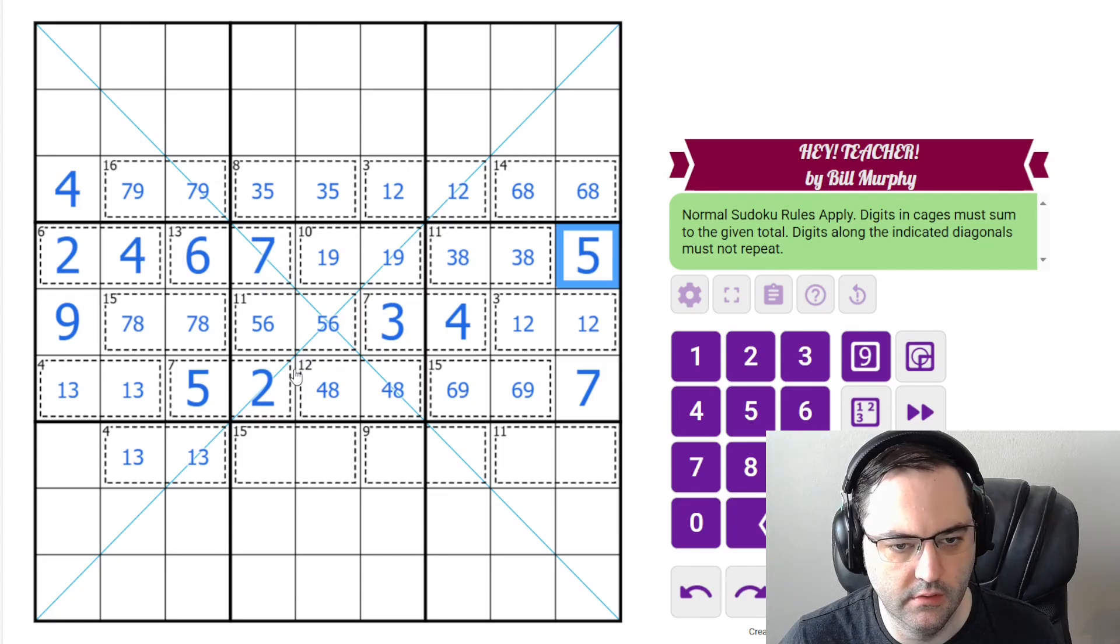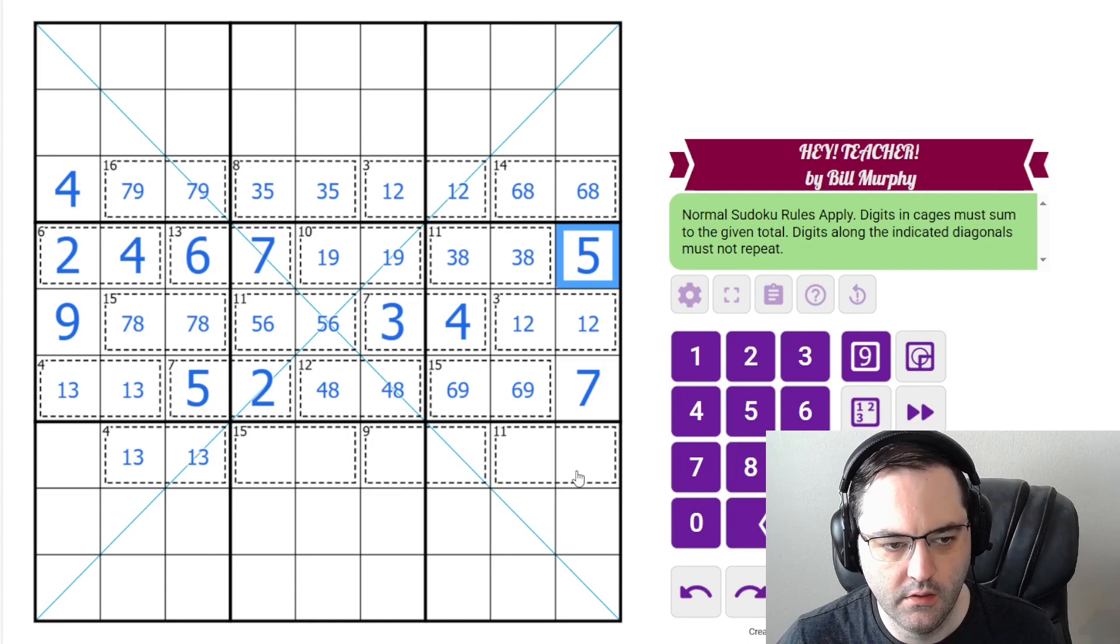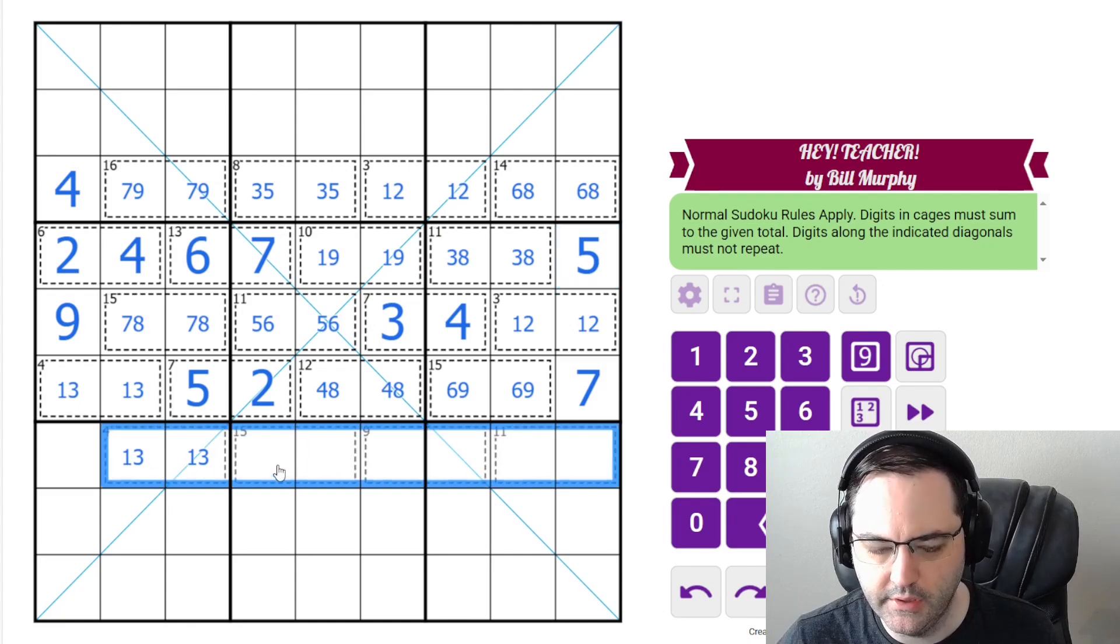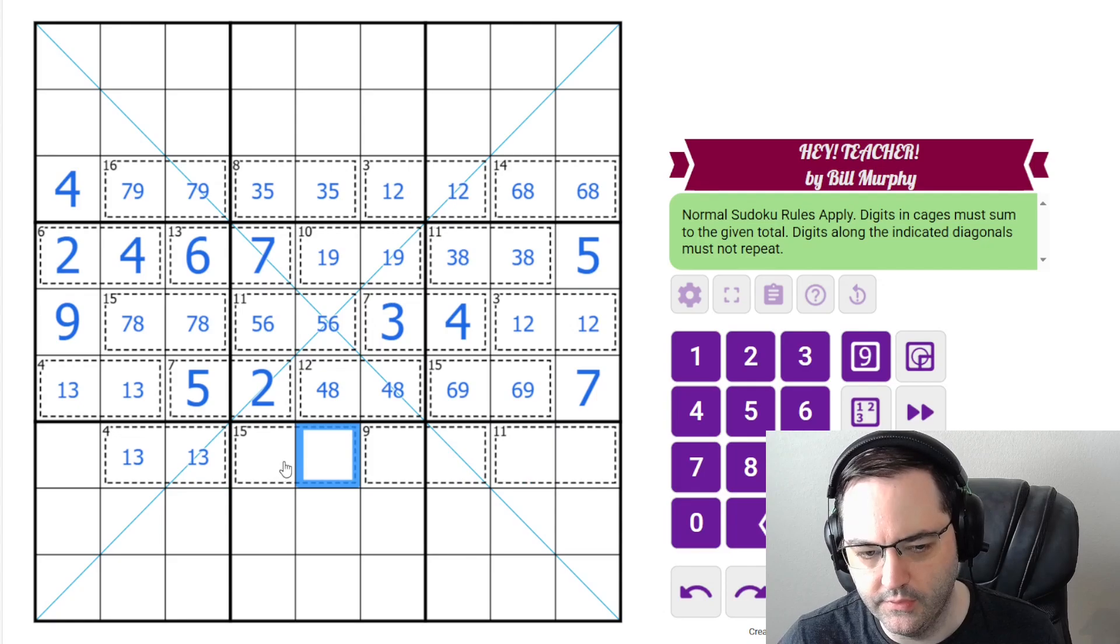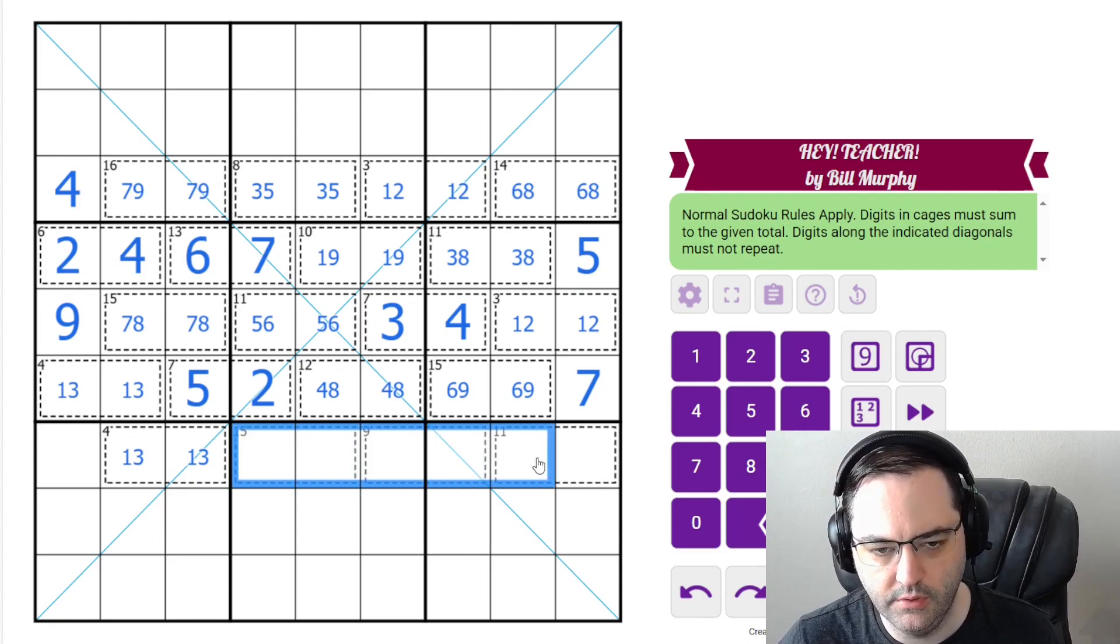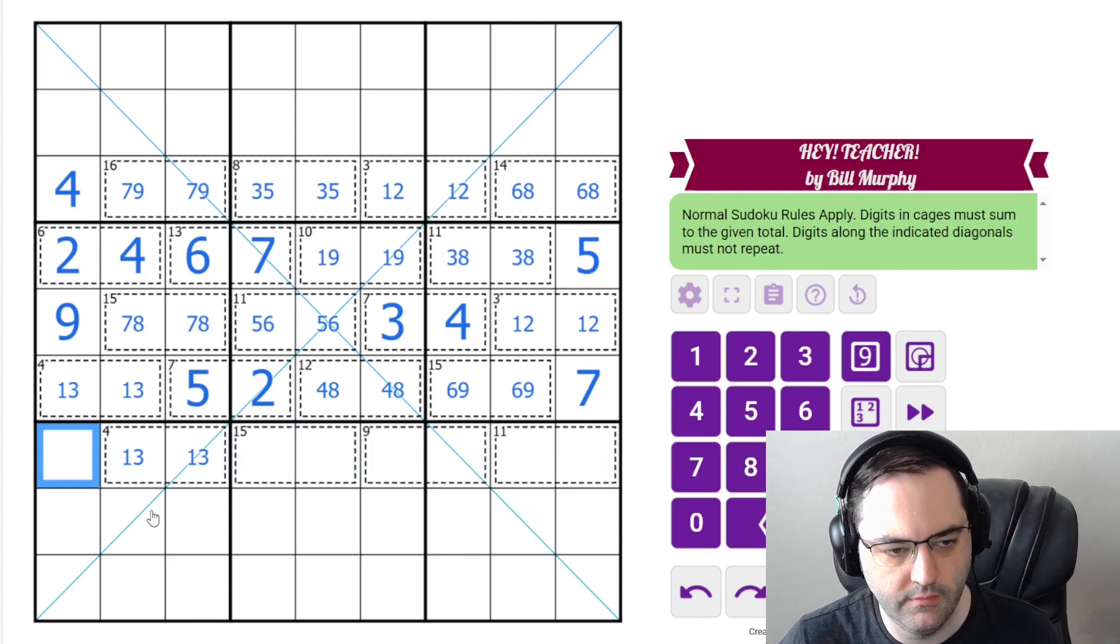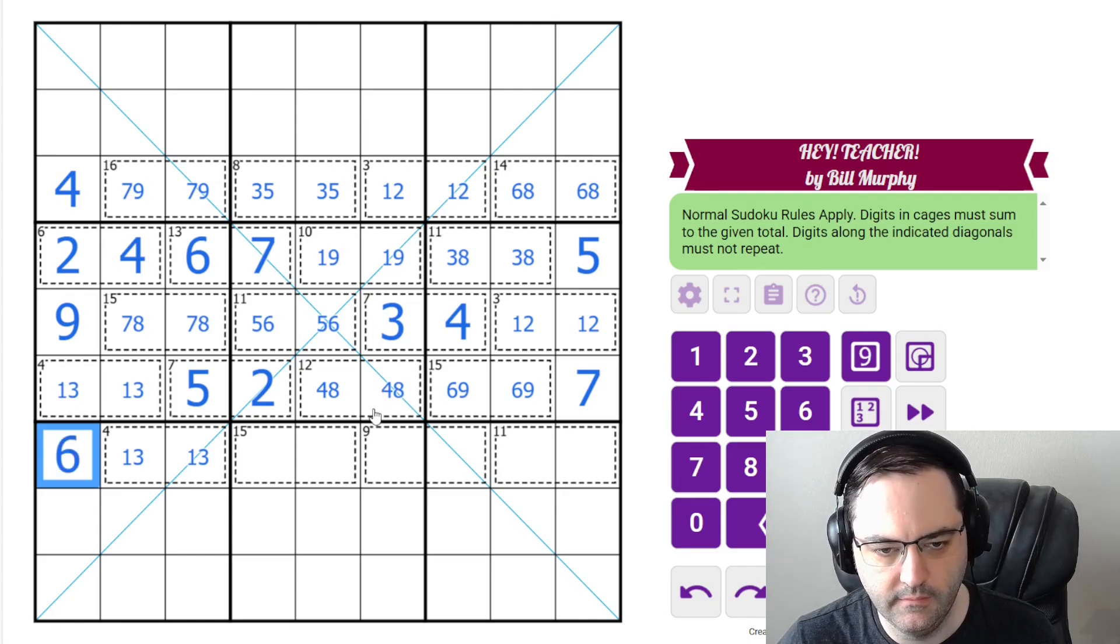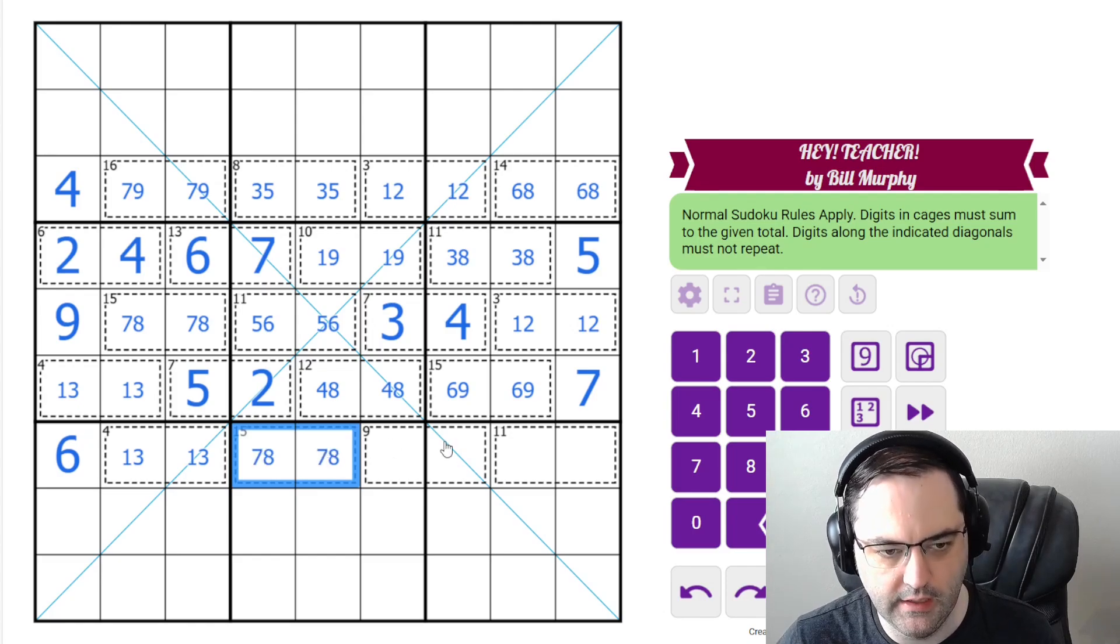Checking for any other specific eliminations. I don't think we have any other ones yet. This one is a little less restricted. We could use the sum trick here. 34, 35, 4 is 39. So we need a 6. And that means the 15 must be 7, 8.